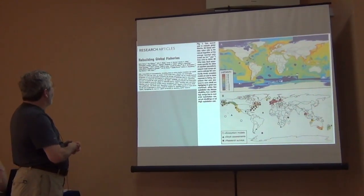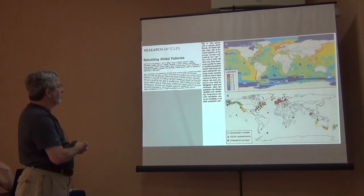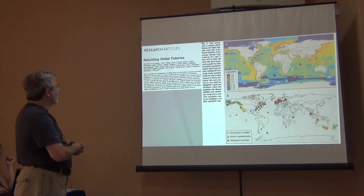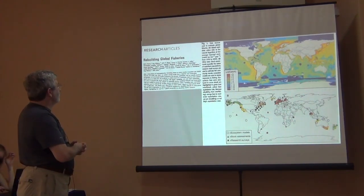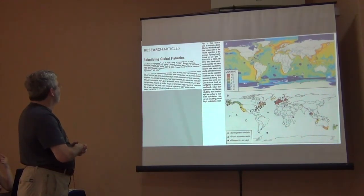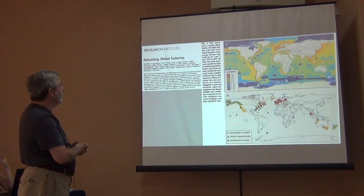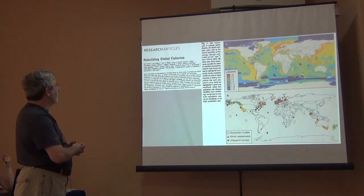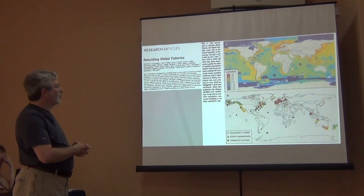Here's a paper: 'Rebuilding Global Fisheries.' I'll just read a bit of the abstract. After a long history of over-exploitation, increasing efforts to restore marine ecosystems and rebuild fisheries are underway. In 5 of 10 well-studied ecosystems, the average exploitation rate has recently declined. Yet 63% of assessed fish stocks worldwide still require rebuilding. Even lower exploitation rates are needed to reverse the collapse of vulnerable species.